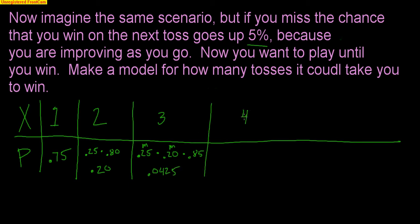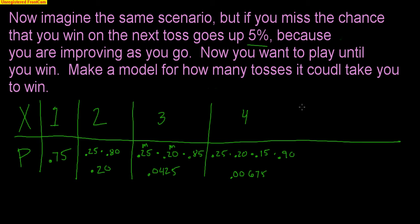Now for four darts — pause and try it on your own if you'd like. I missed the first, missed the second, missed the third. On that third toss you had an 85% chance of winning, but you missed. Now on that fourth toss, the chance has increased to 90%. So 0.25 times 0.20 times 0.15 times 0.90 equals 0.0065. It keeps getting smaller because you should have won on the first dart — the more darts needed, the less likely.